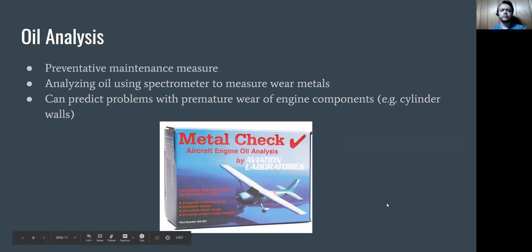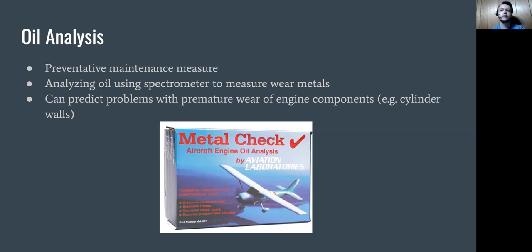Oil analysis is a good preventative maintenance measure you can take when changing the oil. You can analyze the oil removed from the engine using a spectrometer to measure wear metals. As the engine runs, it deposits metals into the oil — this is normal, and there is a certain normal range of wear metals expected. Checking the filters for abnormal amounts of metal can predict problems with premature wear of engine components. For example, if cylinder walls are wearing prematurely, you'll see more metal in the filters or in the spectrometer reading.